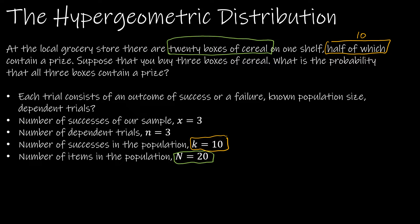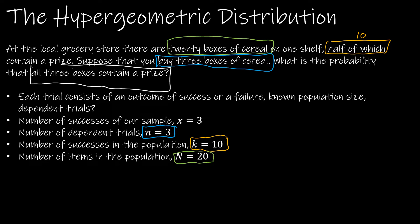Half of those 20 boxes contain a prize. Now we switch gears and talk about the sample. Suppose you buy three boxes of cereal — that's your sample. The number of trials n is three. What is the probability that all three boxes contain a prize? That is the number of successes in our sample: x equals three.